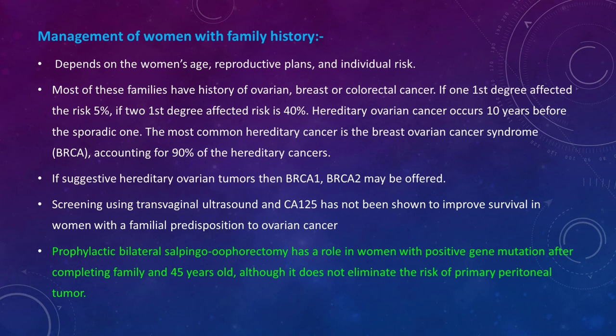Prophylactic bilateral salpingo-oophorectomy has a role in women with positive gene mutations, after completing their family and after 45 years of age. Although it does not eliminate the risk of primary peritoneal tumor, it significantly reduces the hereditary risk.